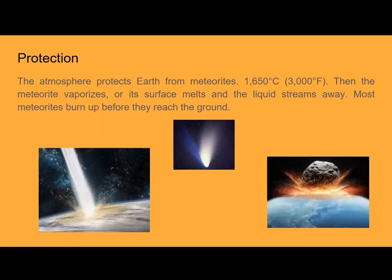The atmosphere protects Earth from meteorites — at 1,650 degrees Celsius, the meteorite vaporizes and the liquid streams away. Most meteorites burn up before they reach the ground. For example, in this picture you can see a meteorite burning up, a comet, and then a giant asteroid which would probably destroy the Earth.